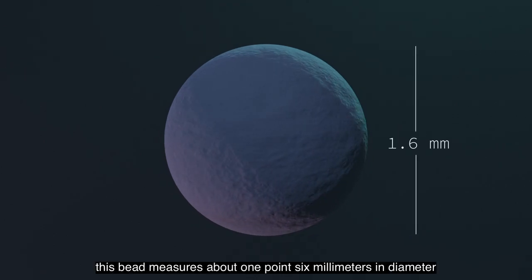Understanding reforming chemistry begins with the catalyst itself. For this example, we will explore a spherical bead used in continuous catalytic reforming. Made from high purity alumina gel, this bead measures about 1.6 millimeters in diameter, about the size of the tip of a ballpoint pen.